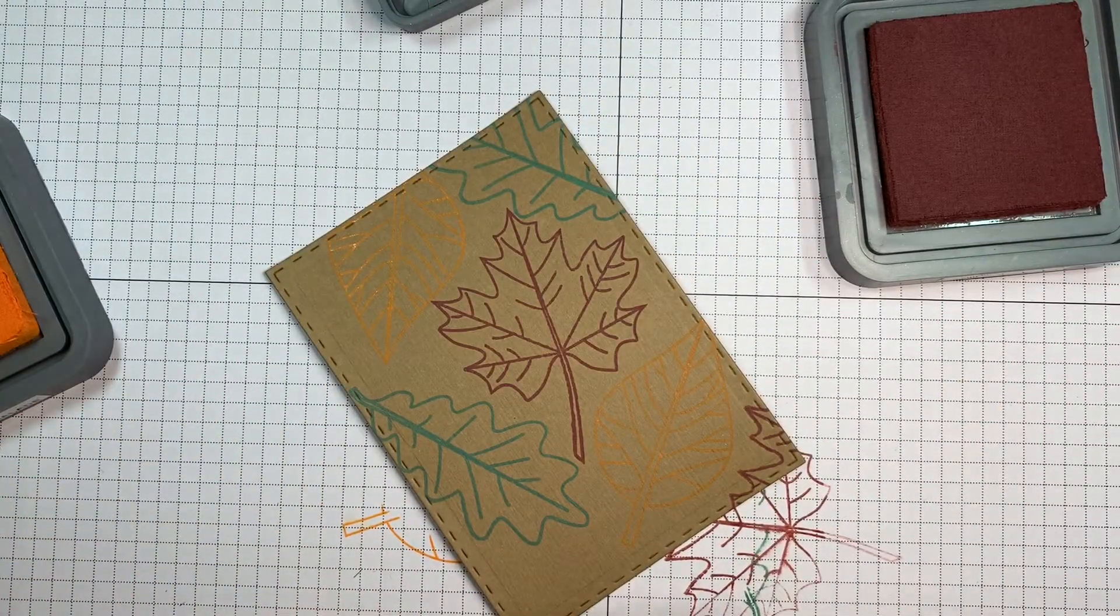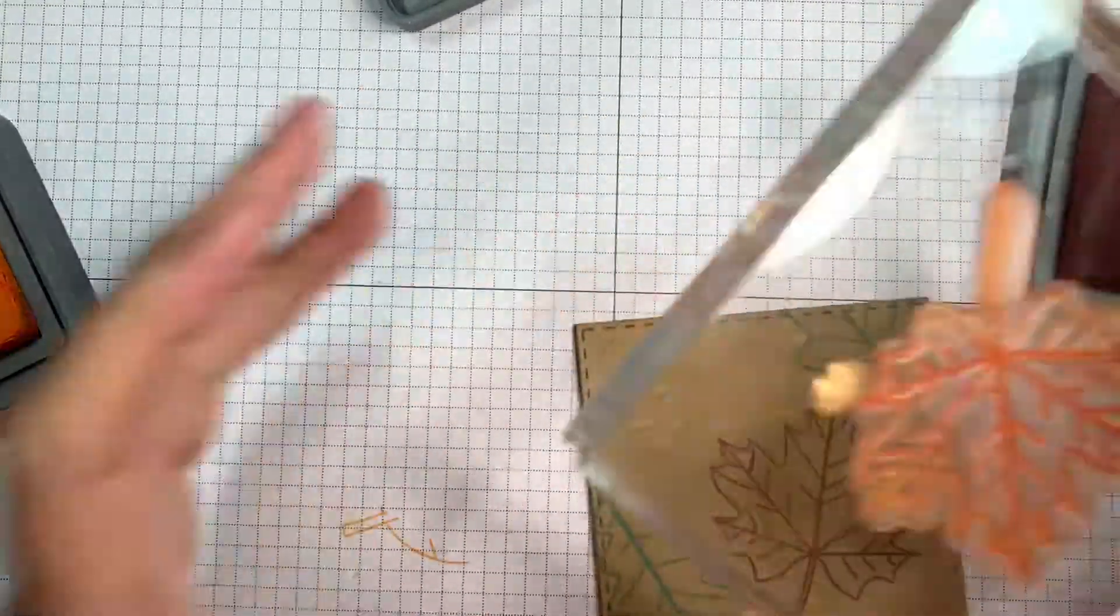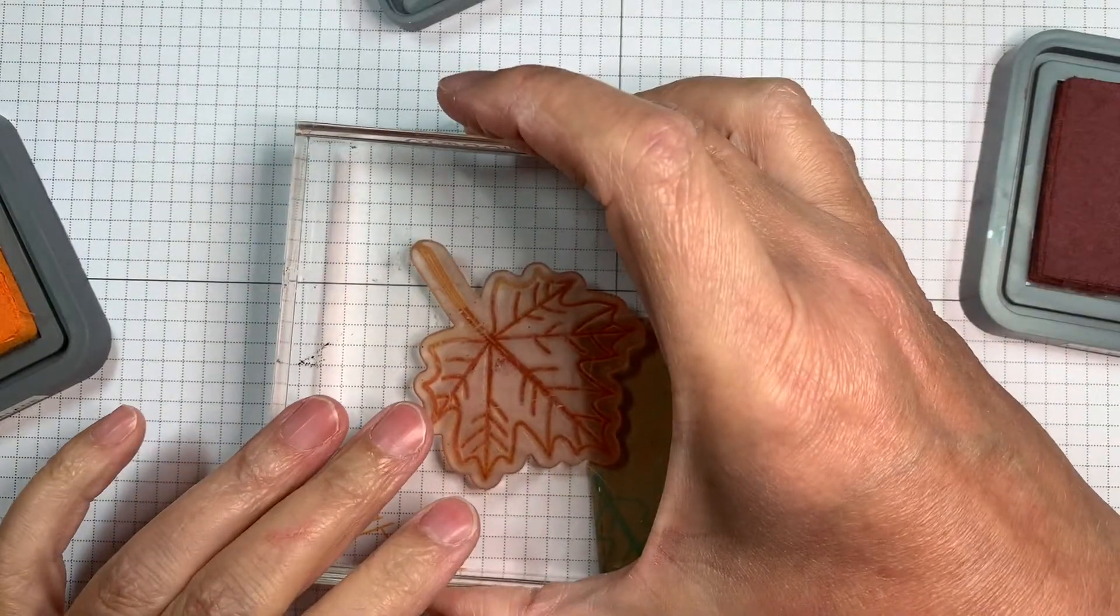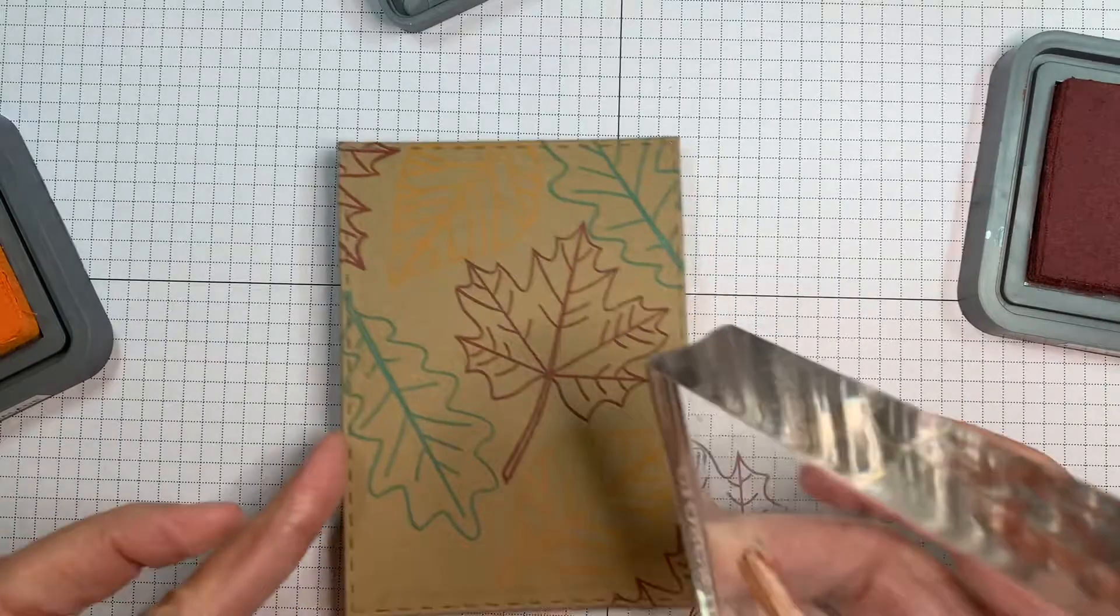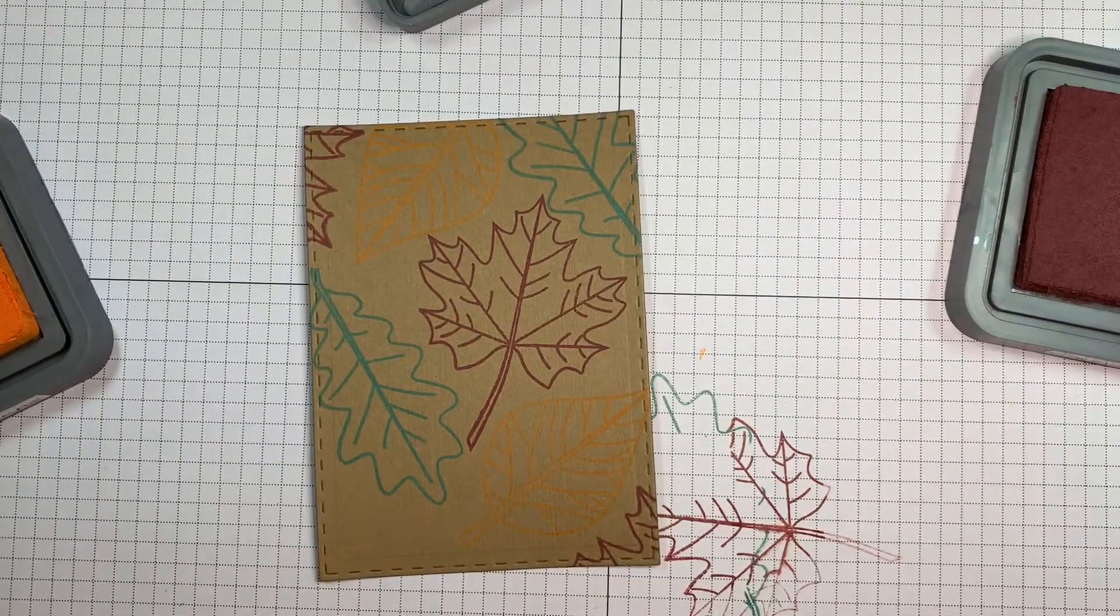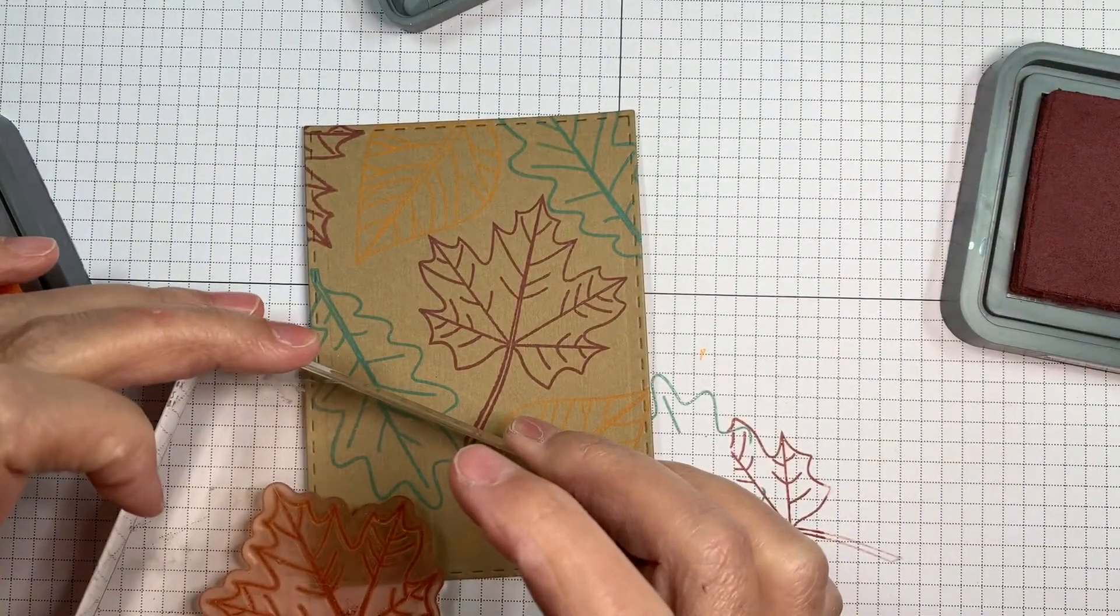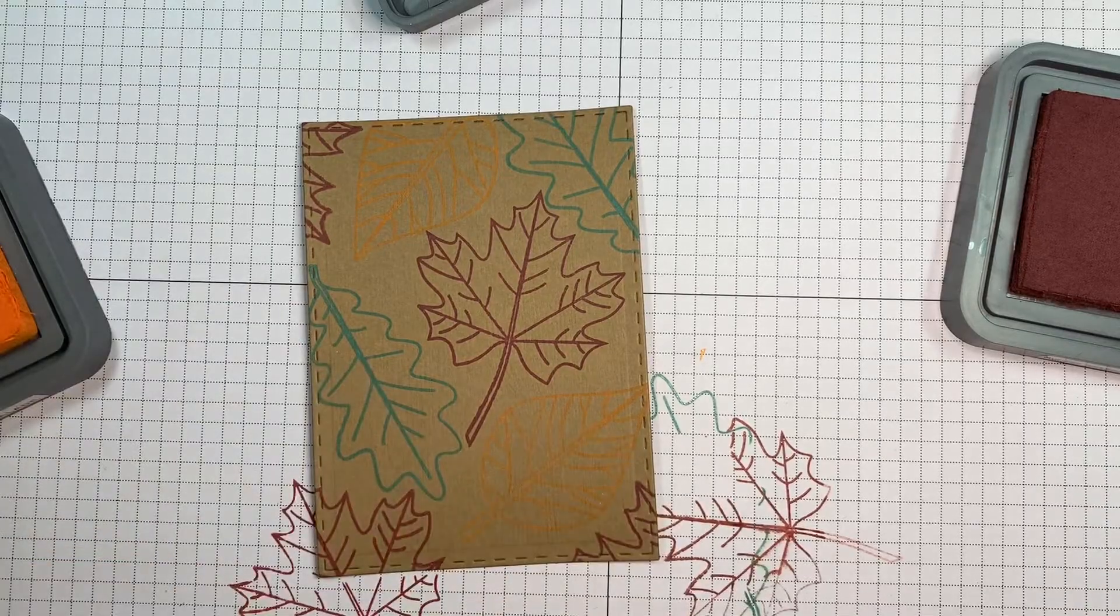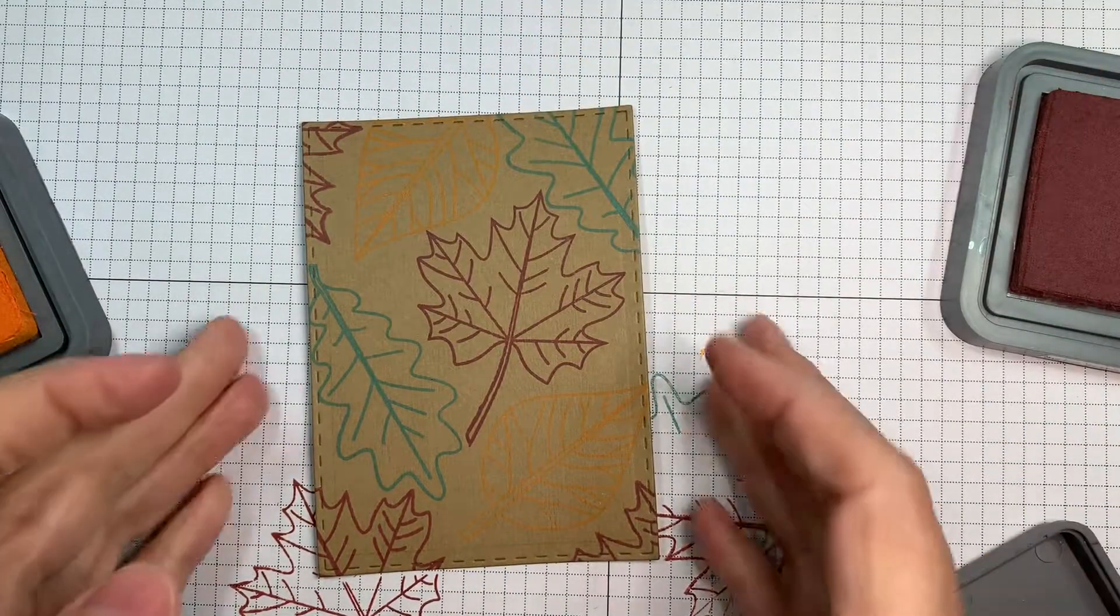I noticed that as I was stamping, my Spiced Marmalade didn't really show up that great on my background. So I decided to make use of the neat product, the neat things that Distress Oxide inks can do. I'm going to make the inks oxidize and it'll show up a little bit better when I do that. Just a little freehand stamping.